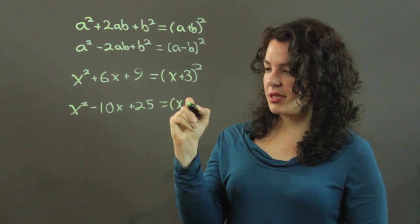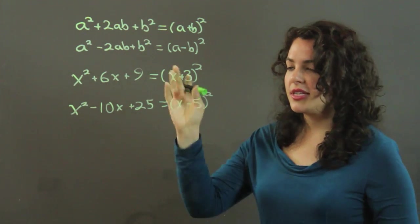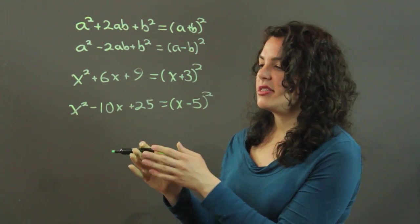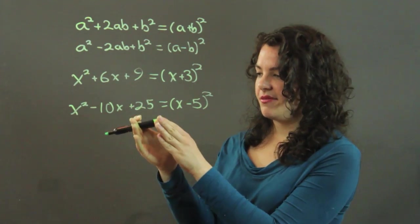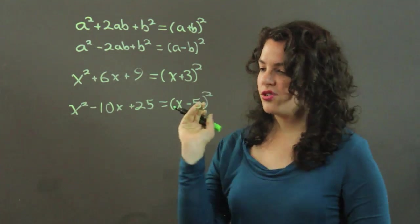So instead of x plus 5, I have x minus 5 squared. So this is a lot easier. Once you get the hang of identifying these, it's so much easier than looking at this and asking what multiplies to 25 and adds to negative 10. You just see what it is, and you just write it.